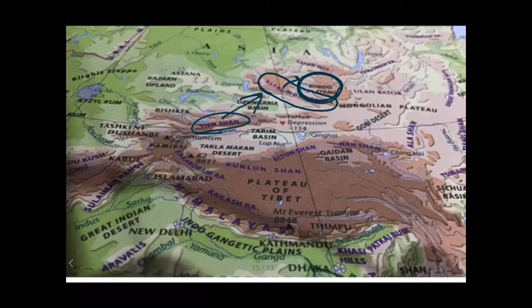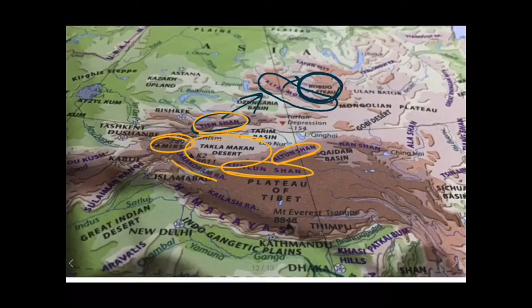These are all the features we have seen: the Taklamakan Desert, Kunlun Shan Mountains, Tien Shan Mountains, and the Altun Shan Mountains which are an extension of the Kunlun Shan Mountains. Then there are the Pamir Knots, the Karakoram Range, the Plateau of Tibet, and the Himalayan Mountains — which you know very well. Now let us move towards the Sayan Mountains.